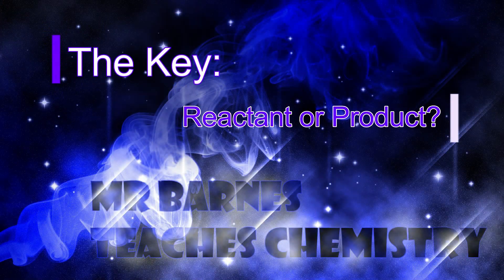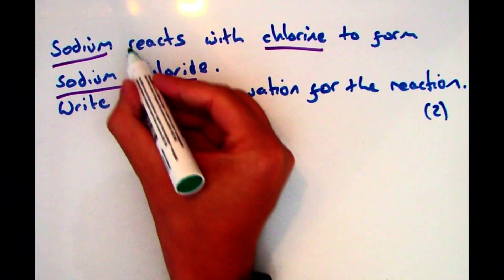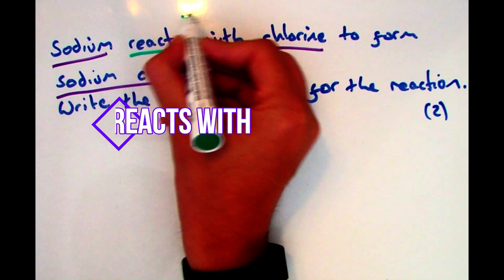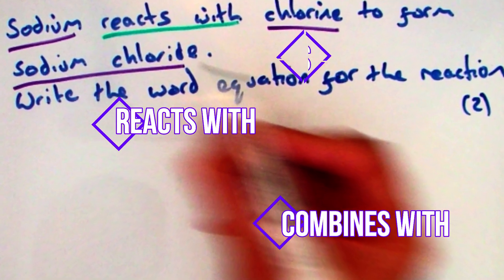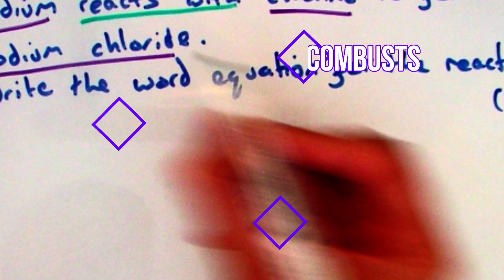Your first step is to determine which are the reactants and which are the products. If you see reacts with, combines with, combusts, or is added to, they're your reactants.